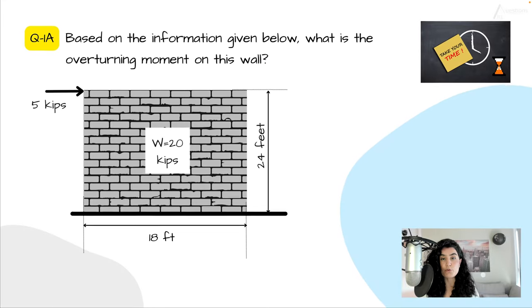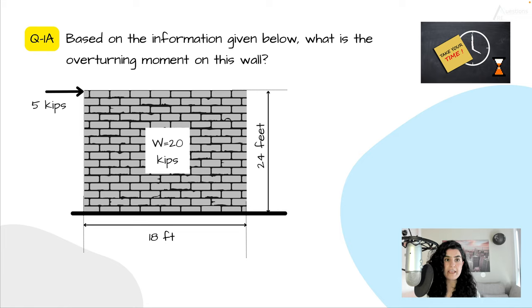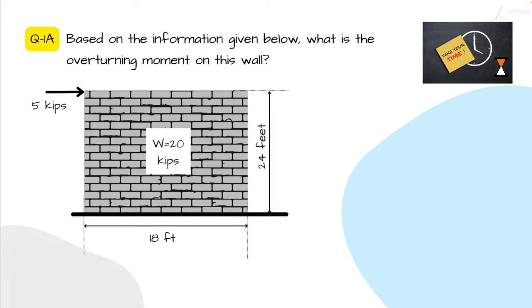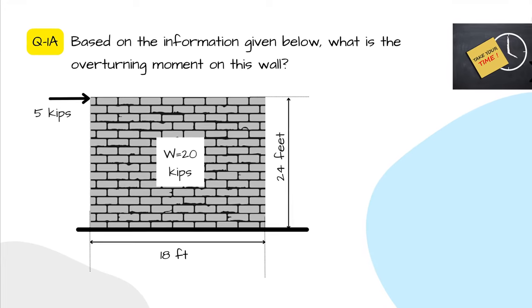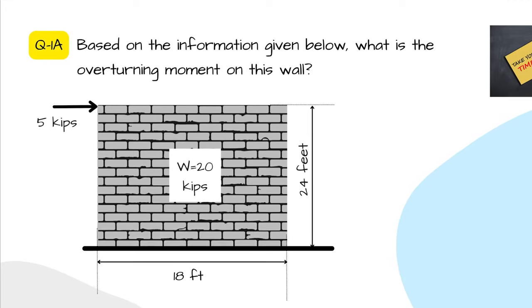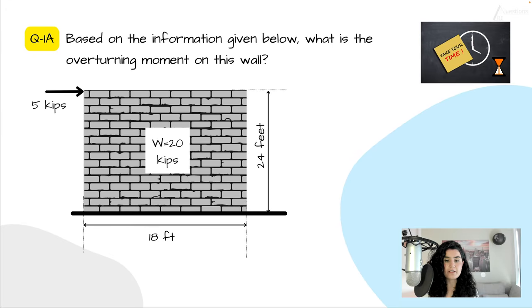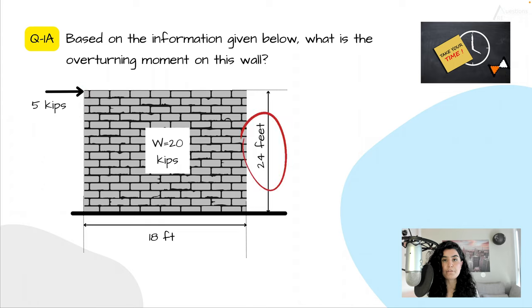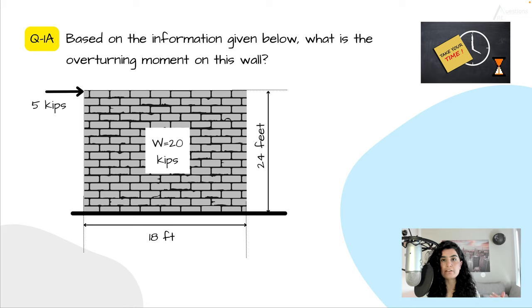Let's do a couple of questions to understand the issue better. Question 1a: based on the information given below, what is the overturning moment on this wall? As you can see, we have a wall with a 5-kip lateral load acting in the horizontal direction. The wall itself is 24 feet tall and 18 feet wide, and the wall's weight is 20 kips.